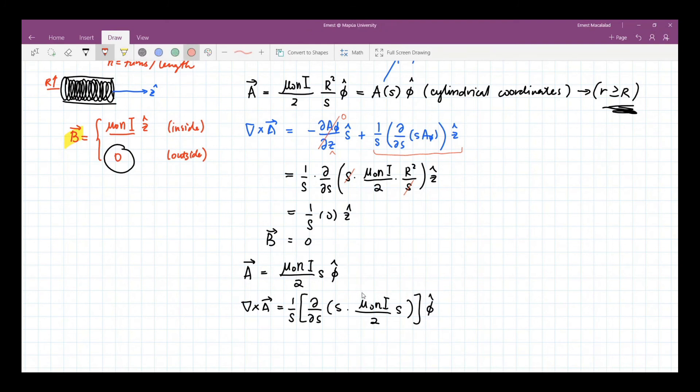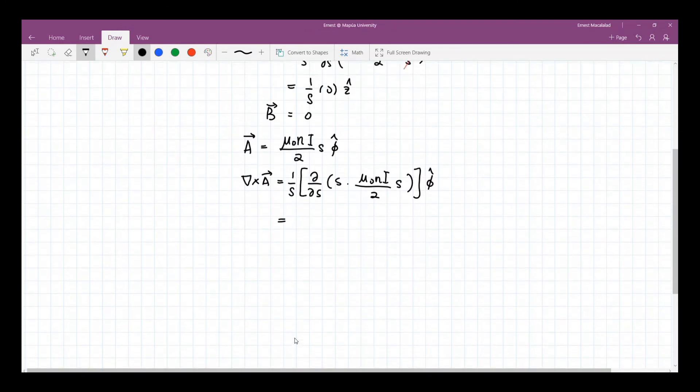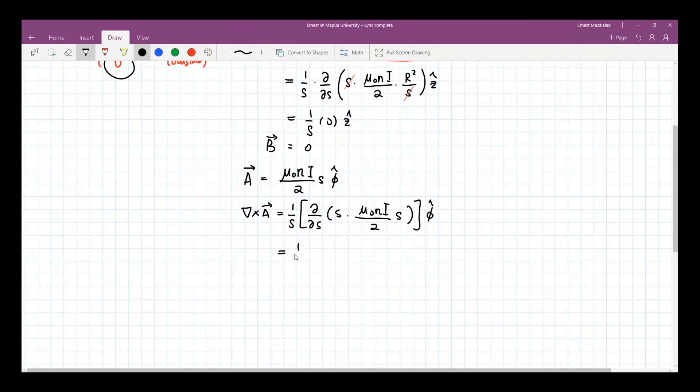So this is mu naught n I over 2 s z hat. From here we cannot cancel anything, but we can take out this constant. So this is 1 over s times mu naught n I over 2 times derivative with respect to s of s squared z hat. So this derivative is 2s. So this is 2s, and then multiply it with this factor.